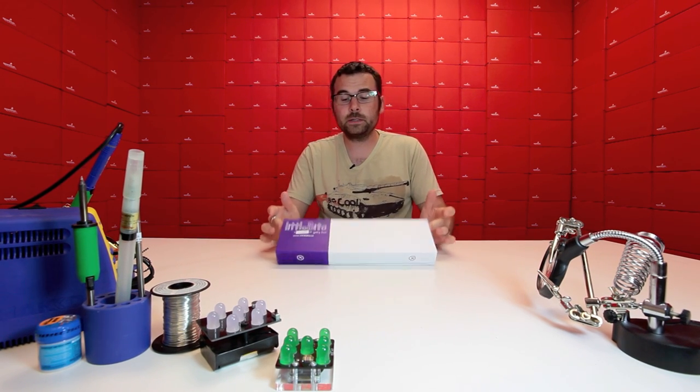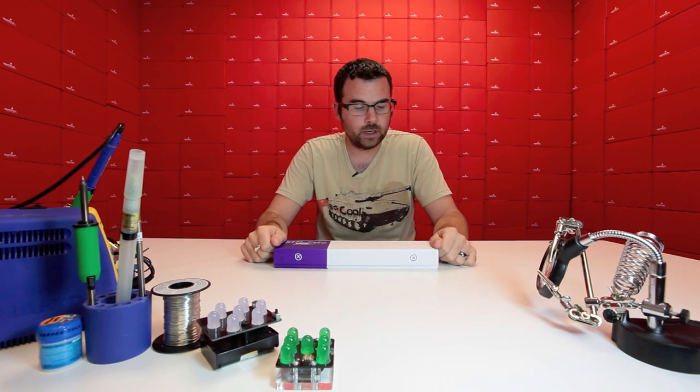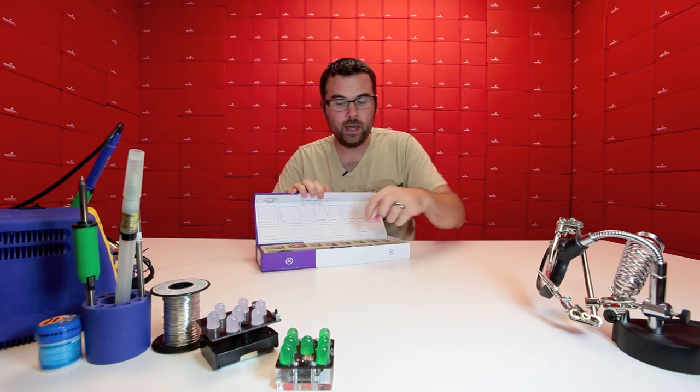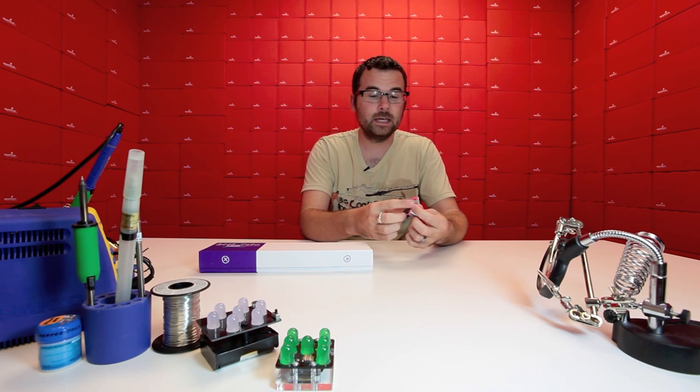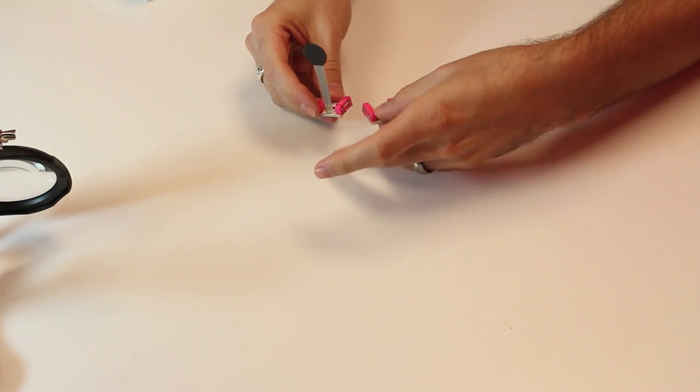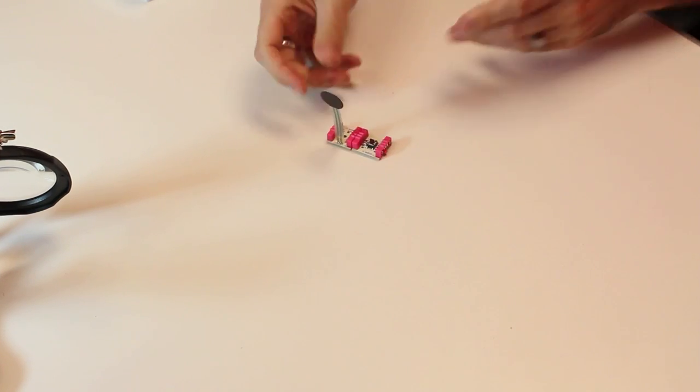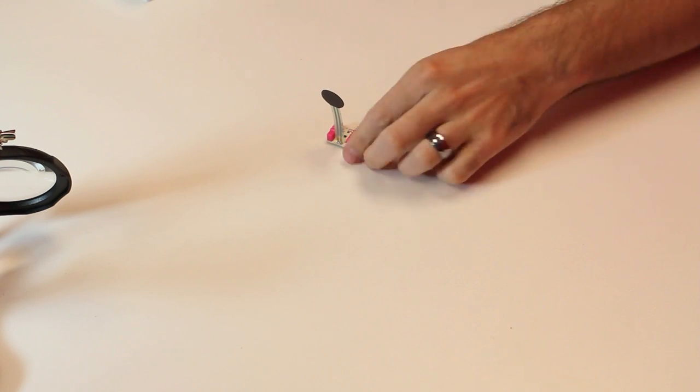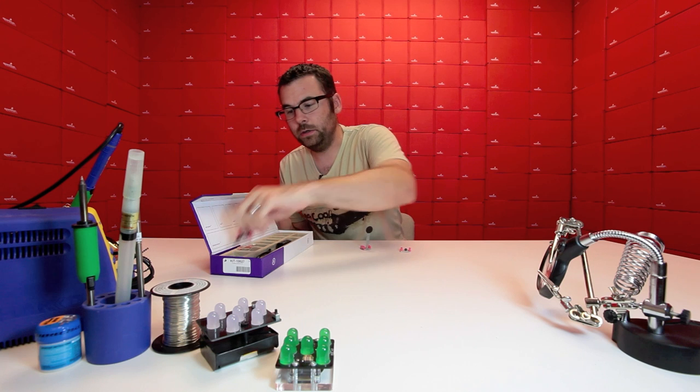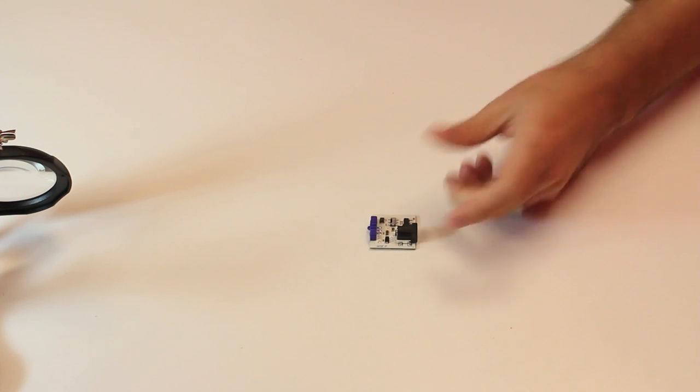For those of you attending Maker Faire this weekend, you might hear about Little Bits. Little Bits is an entry-level kit aimed at teaching people basic electronics. The interesting thing about Little Bits is the way the individual pieces connect. They have these little magnetic connectors that you can only fit one way and they just snap together.